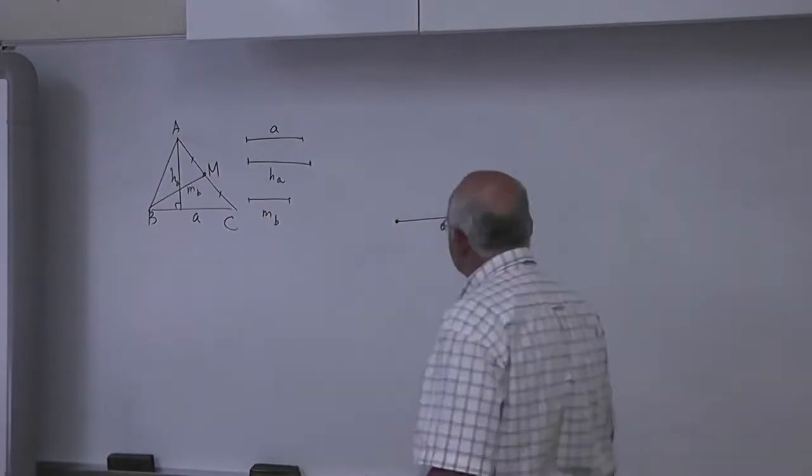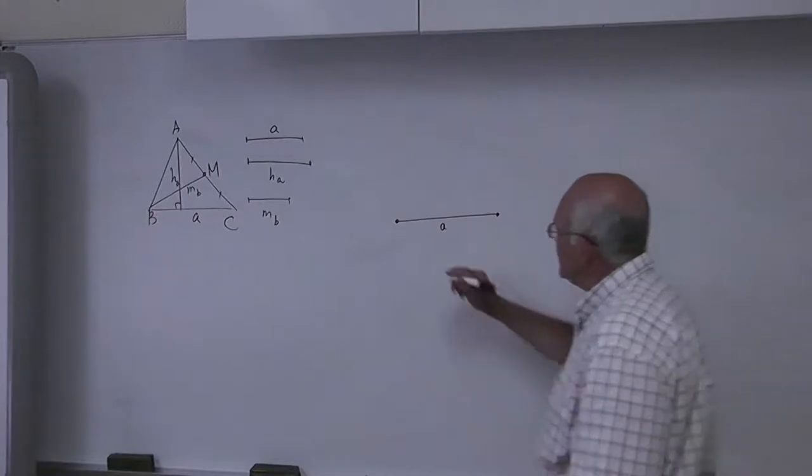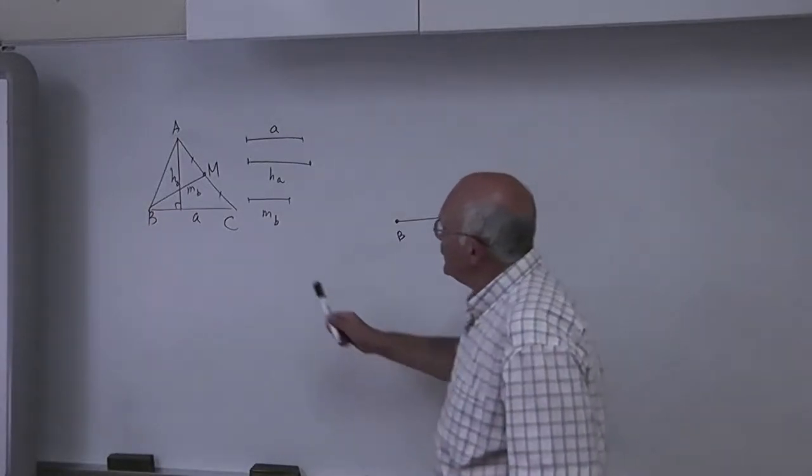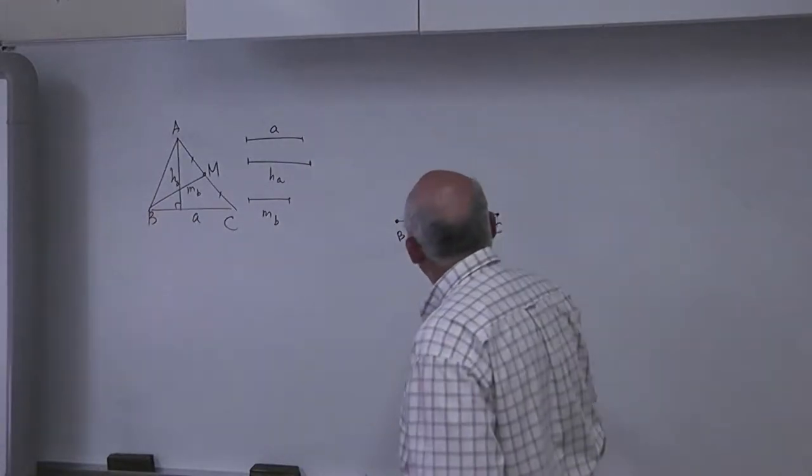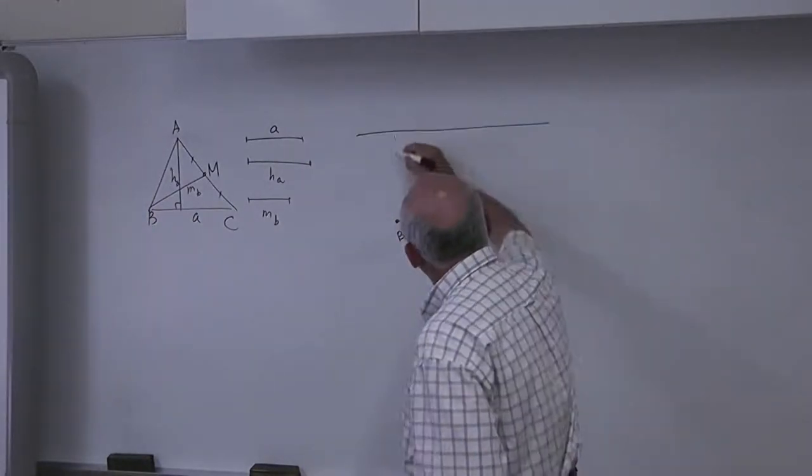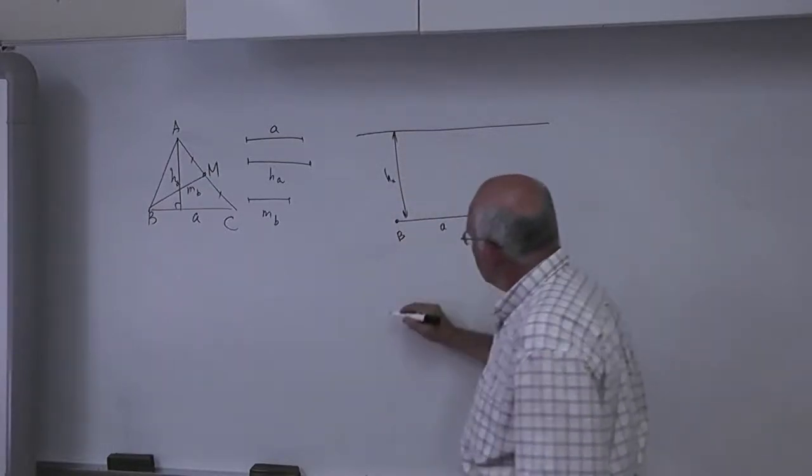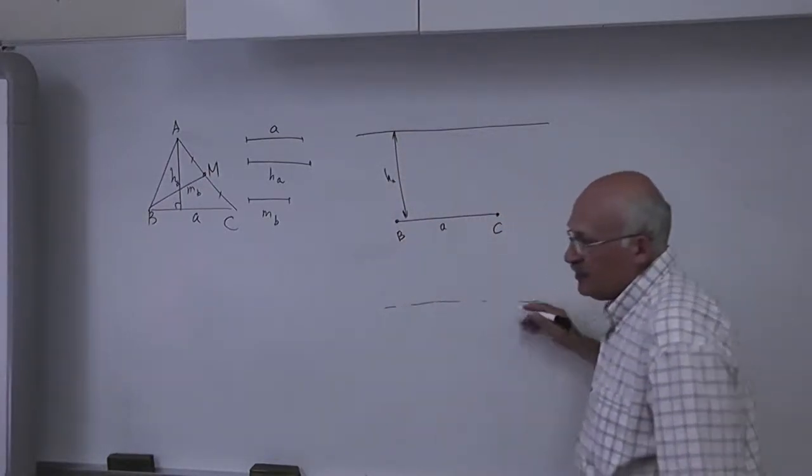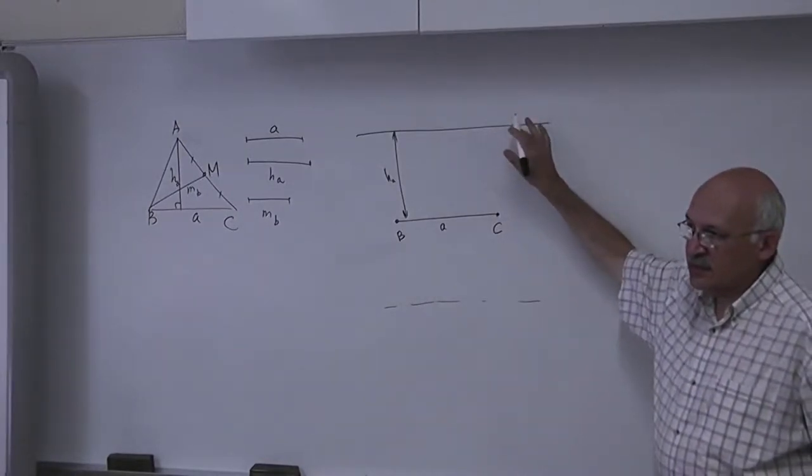We draw a segment on that tree, between the hour BC. Then on the point A we have the locus which is a line, a distance HA from BC. There is also another line on the other side, but this could be the same, so we can consider only this one.